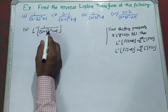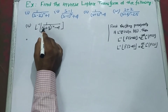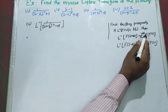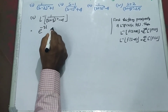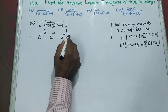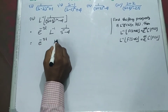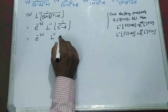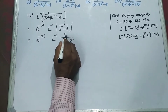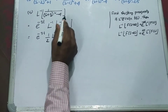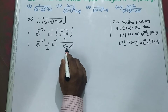Next we consider problem number 3. Again we remove this 3: s plus 3 means s plus A, so e to the power minus 3t times L inverse of 1 by (s squared minus 4). We get e to the power minus 3t times L inverse of 1 by (s squared minus 2 squared). The denominator is minus, so this is a hyperbolic function.